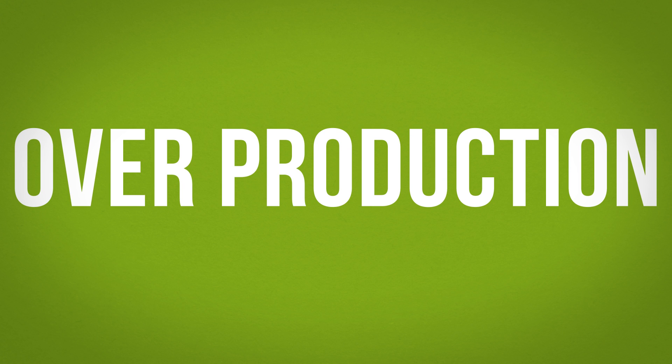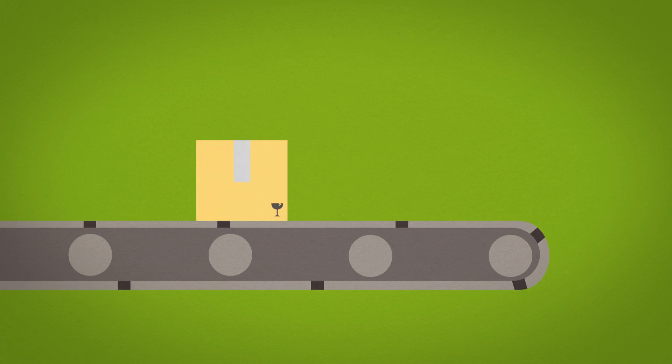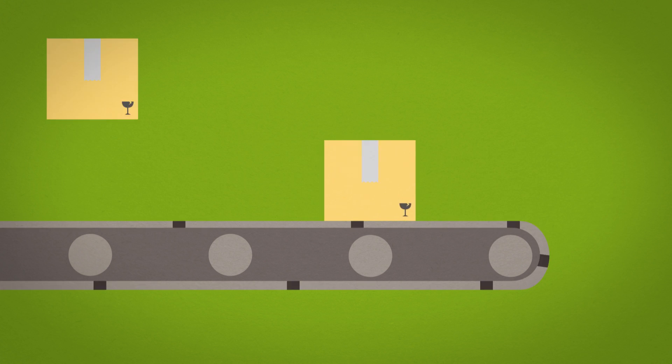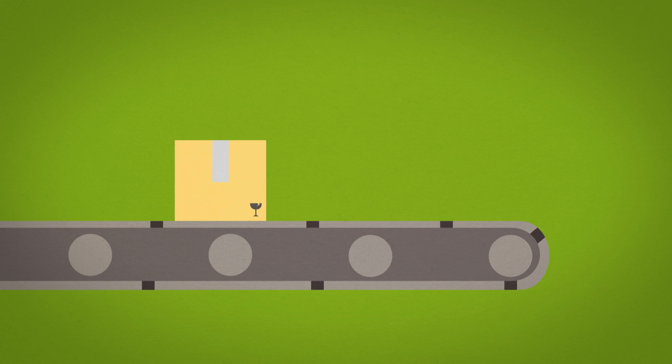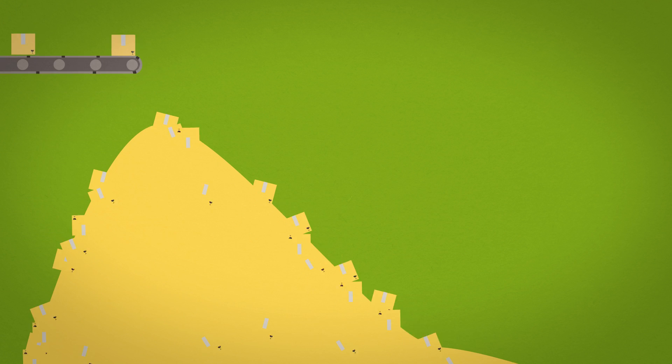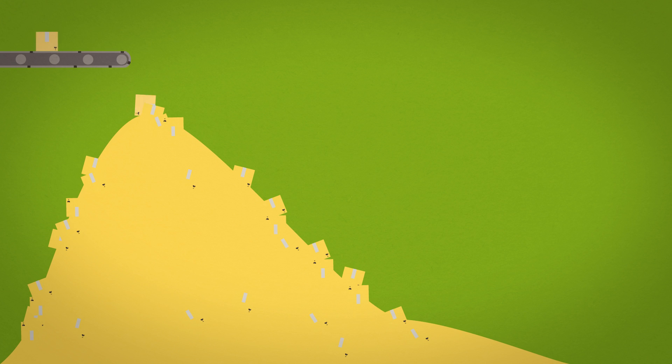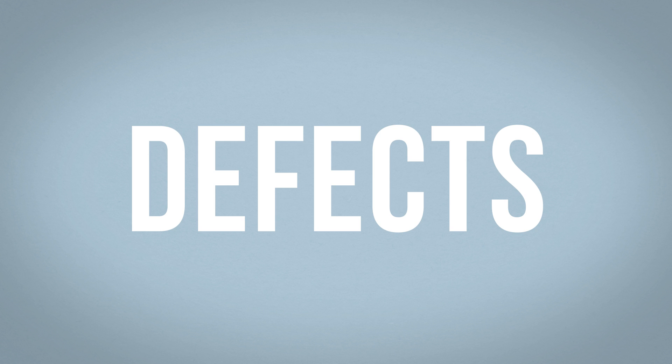The sixth waste is over production: producing more than is needed, faster than is needed, or before it is needed. This results in excess inventory carrying costs.